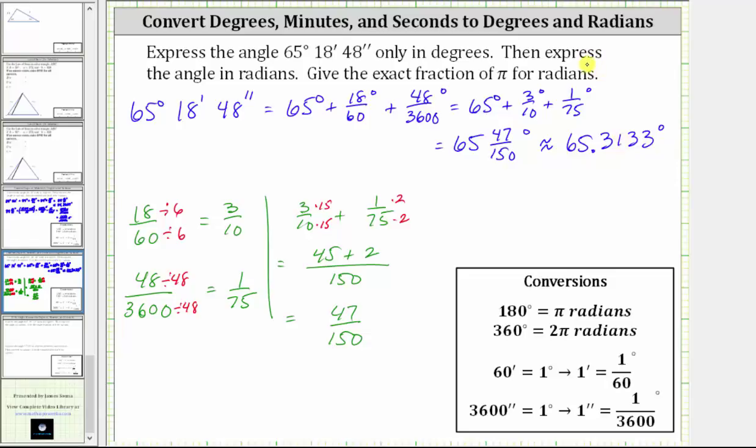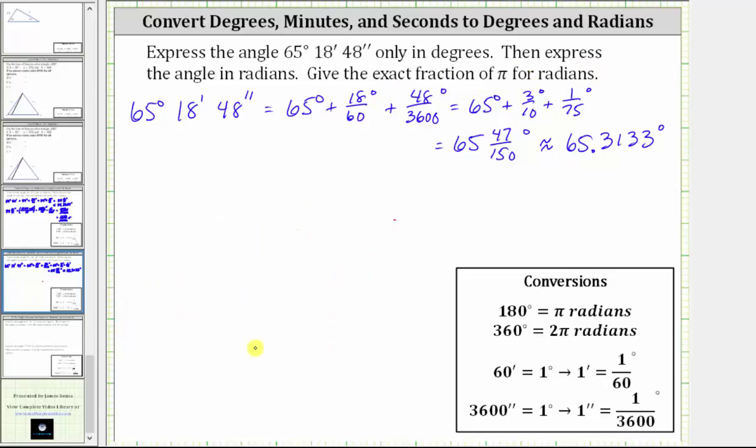Now for the second part, we want to express the angle in radians as an exact fraction of pi. We begin with the angle as a mixed number in degrees, which is 65 and 47/150ths degrees. And now let's convert this to an improper fraction. The denominator is going to remain 150, and the numerator is going to be 150 times 65, plus a numerator of 47. The units here are still in degrees.